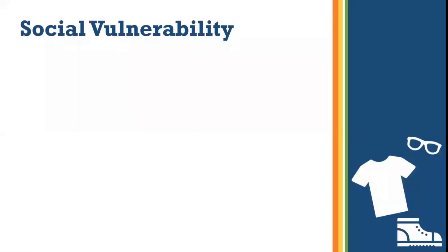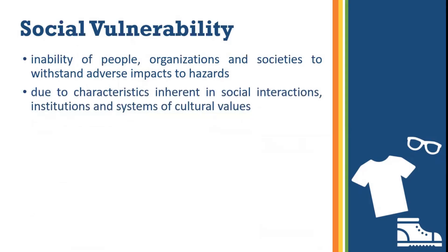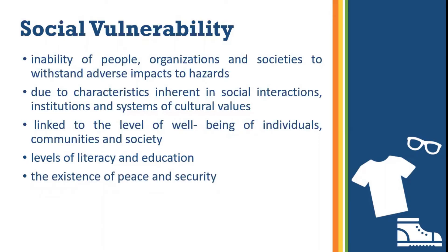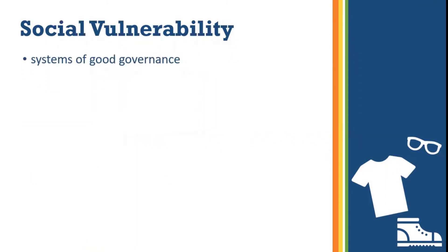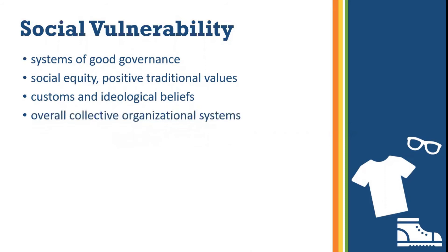The next type of vulnerability is social vulnerability. This refers to the inability of people, organizations, and societies to withstand adverse impacts to hazards due to characteristics inherent in social interactions, institutions, and systems of cultural values. It is linked to the level of well-being of individuals, communities, and society. It includes aspects related to levels of literacy and education, the existence of peace and security, access to basic human rights, systems of good governance, social equity, positive traditional values, customs, and ideological beliefs, and overall collective organizational systems.